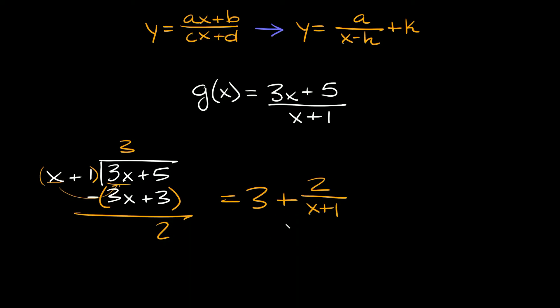So this is our answer but we can actually flip it so it actually looks more like this form over here. So then we can say that our final answer g of x is equal to 2 over x plus 1 plus 3.